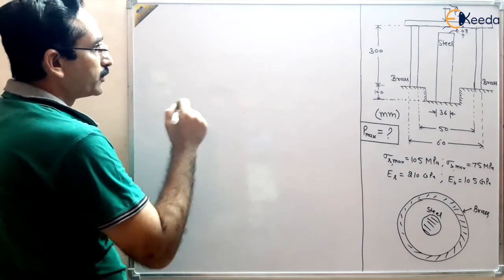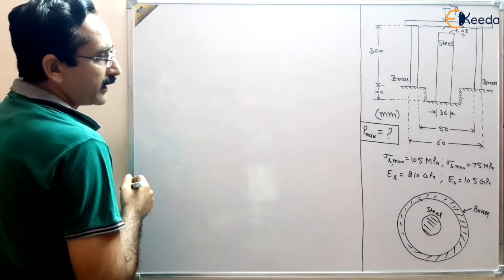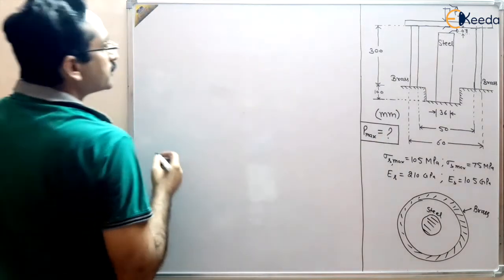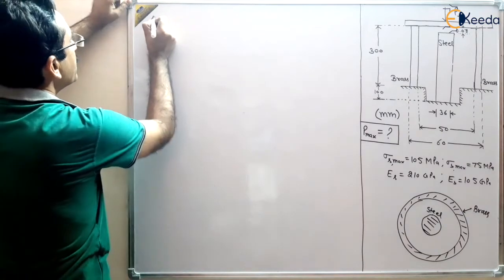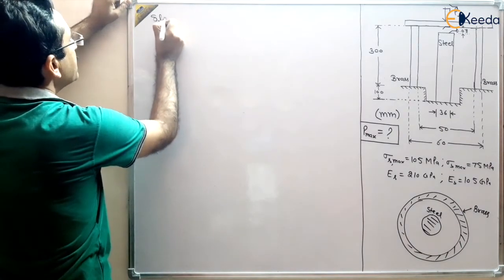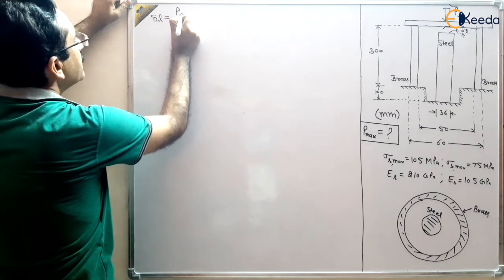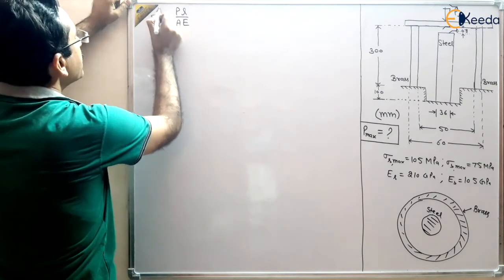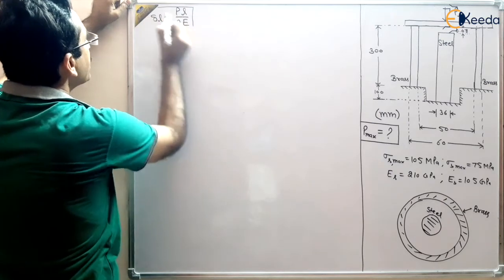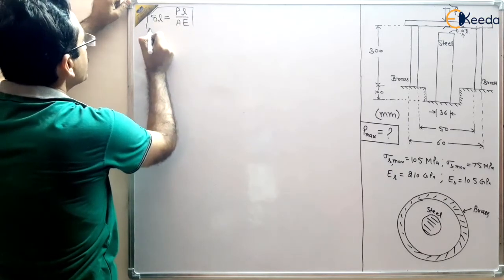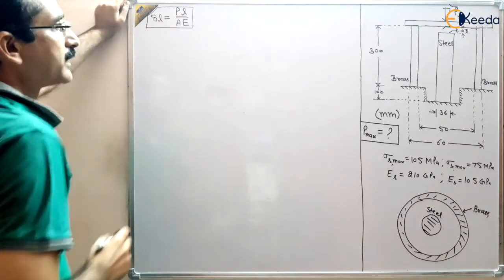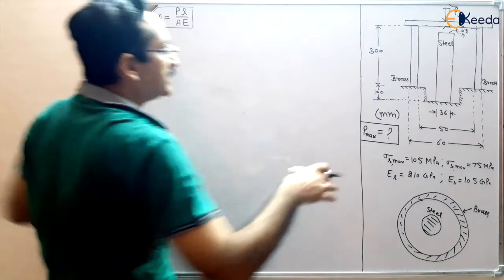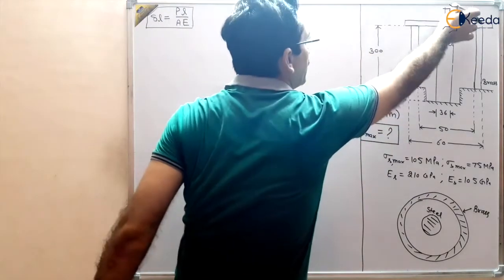We apply initial load P_i and the deflection is 0.08 mm. Using the formula delta_L = PL / AE, we can write: 0.08 mm = P_i × L_brass / (A_brass × E_brass). The deflection due to the initial load P_i equals 0.08 mm.